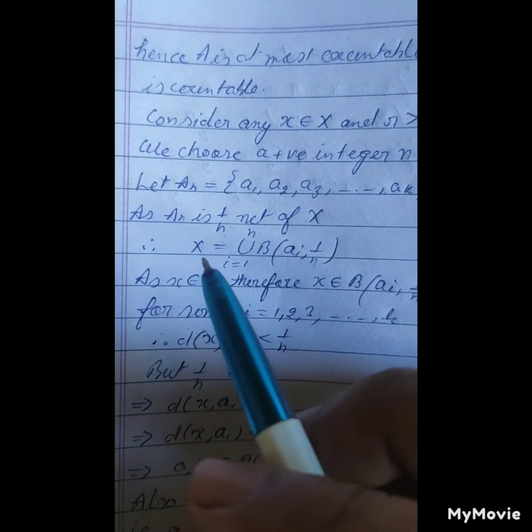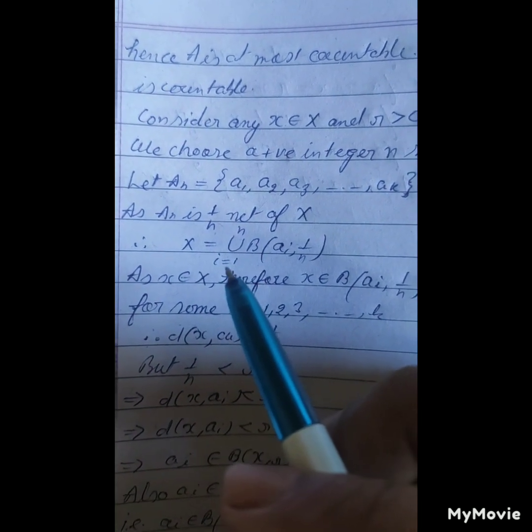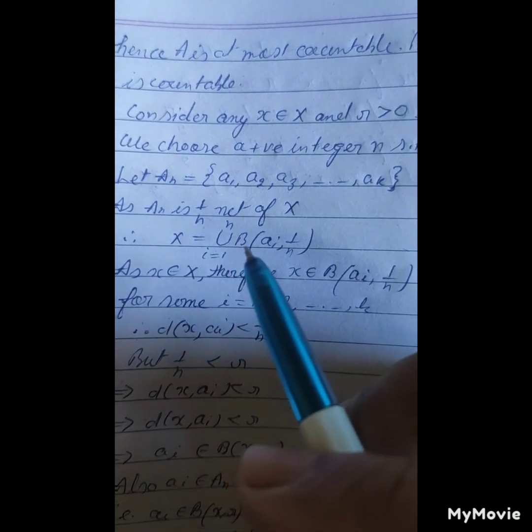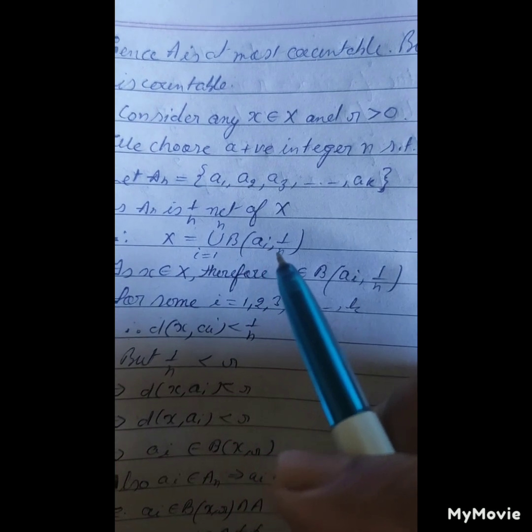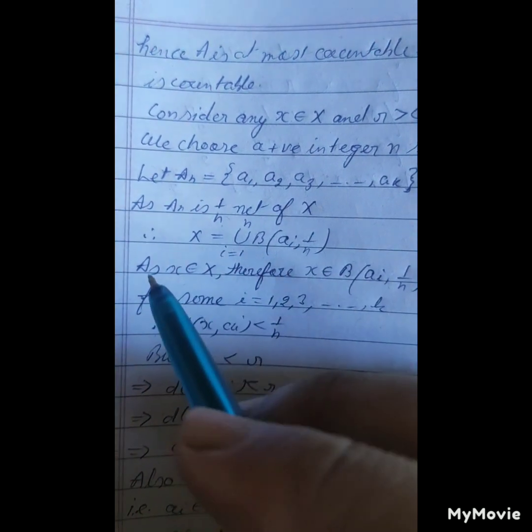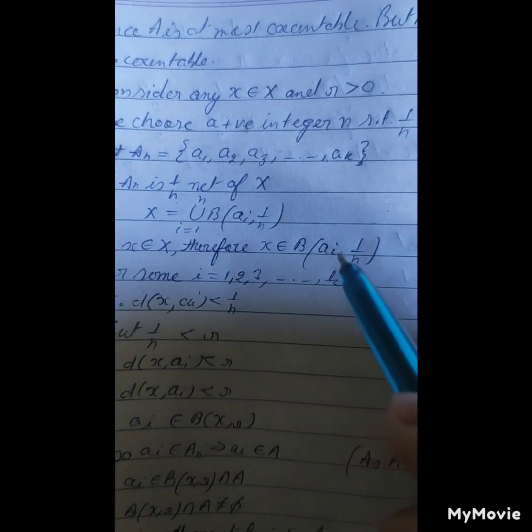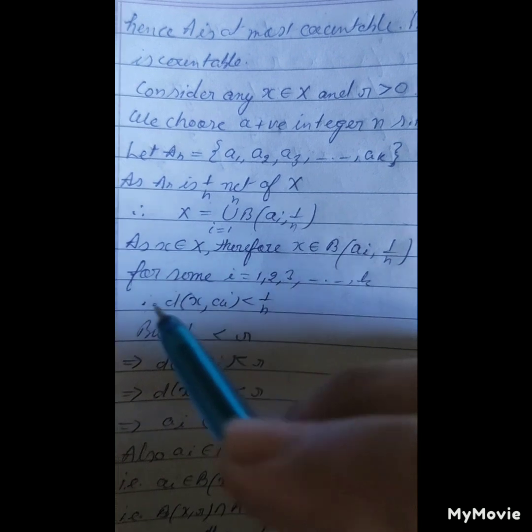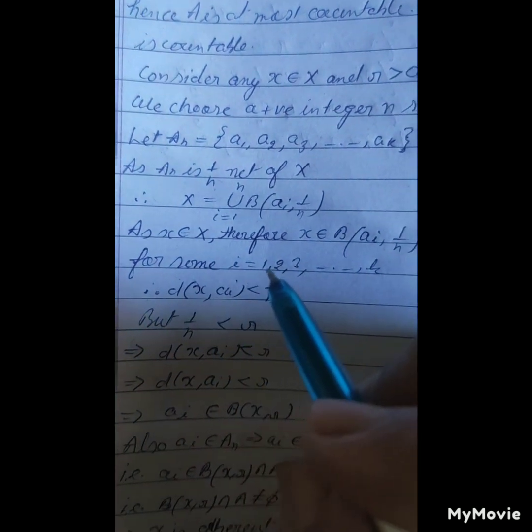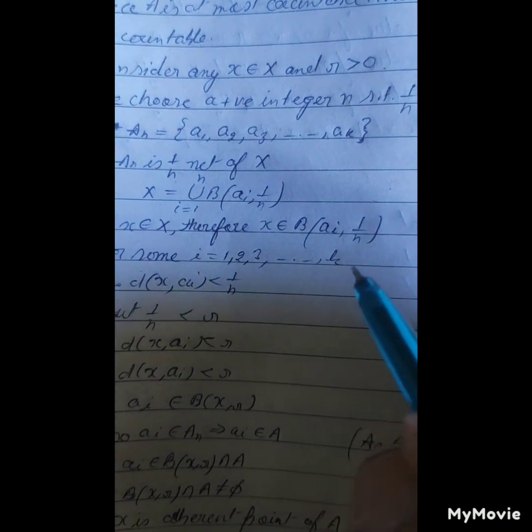As A_n is 1 upon n net of X, so X is equal to union of i varying from 1 to k of B(a_i, 1/n). As x belongs to capital X, therefore x belongs to B(a_i, 1/n) for some i belonging to 1, 2, 3, and so on, k.